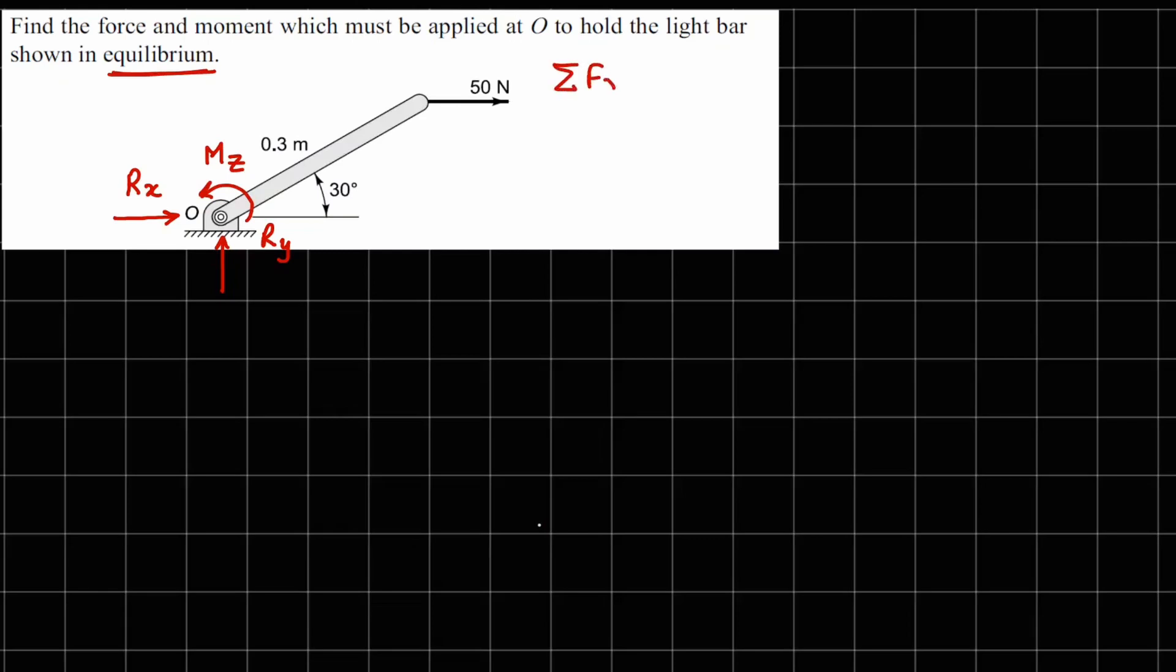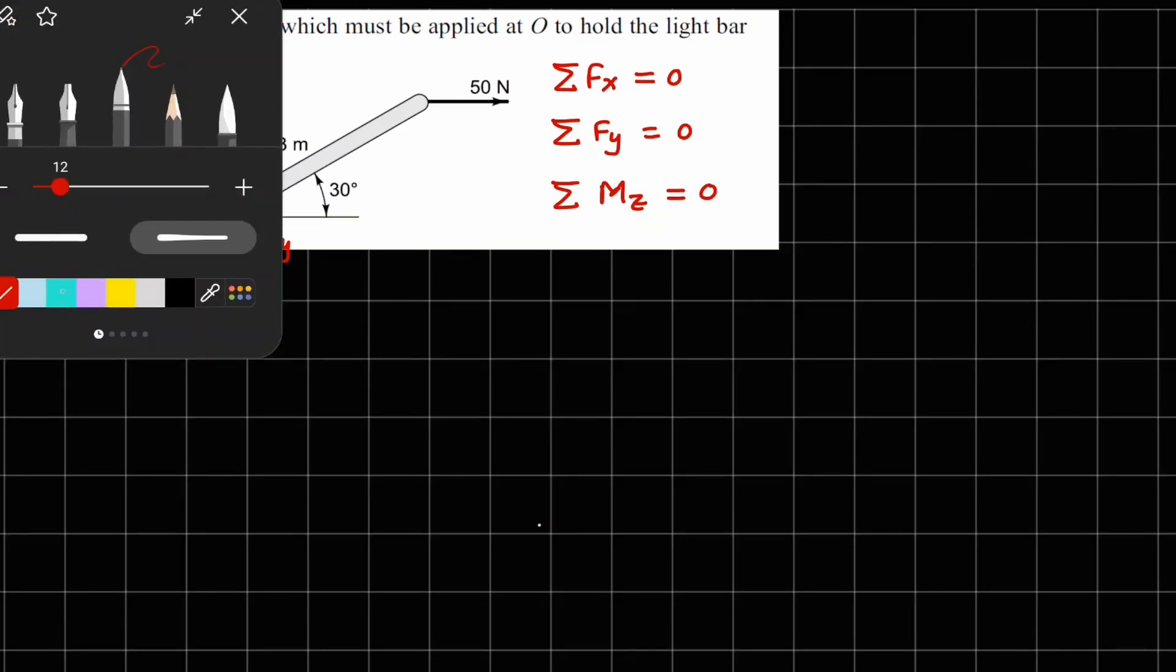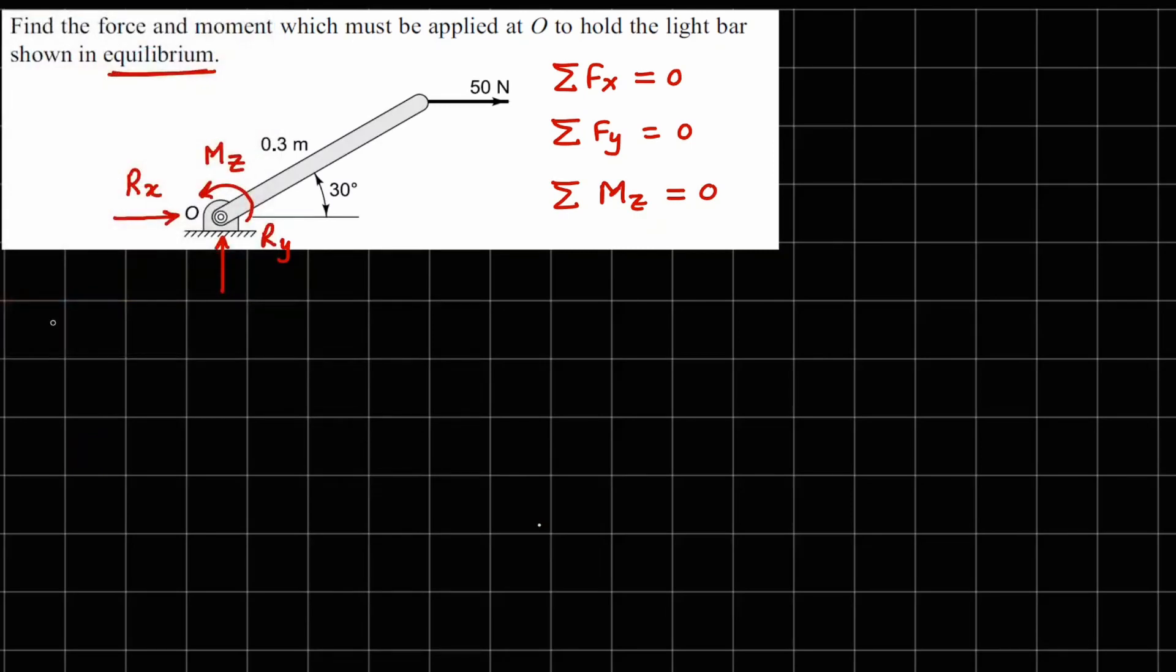Now for equilibrium purposes, it is a two dimensional body, so what are the requirements? The requirements are summation of forces in x and y direction should be equal to 0 and the moment summation should be equal to 0.